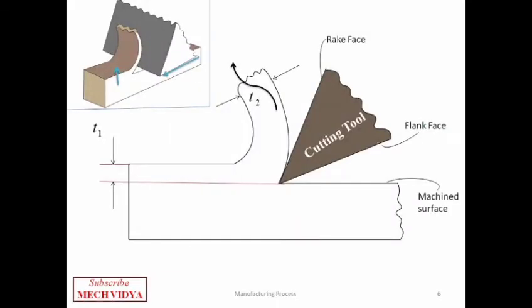Now let us understand the chip removal process more closely. In this diagram, it is a 2D view of the cutting process where a single point cutting tool is removing metal in the form of chips. The face of the tool that is rubbing the chip is called the rake face, and the face near the machined surface is called the flank face. The machined surface is the newly generated surface of the workpiece.